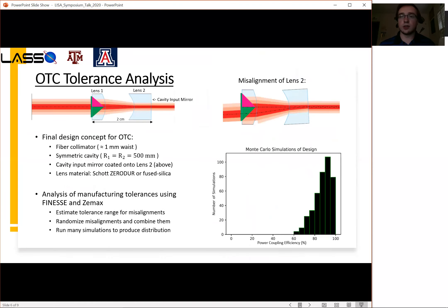So adding those two results together, we would prefer a symmetric cavity due to the fact that it is more tolerant to misalignment of the cavity mirrors. We also want to use a fiber collimator because it is more tolerant to misalignment of the lenses.